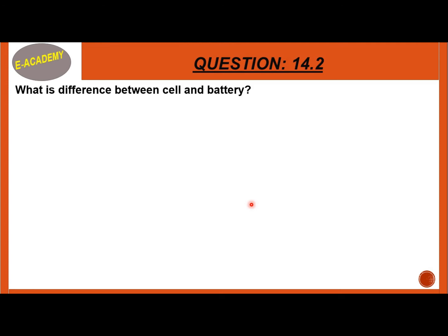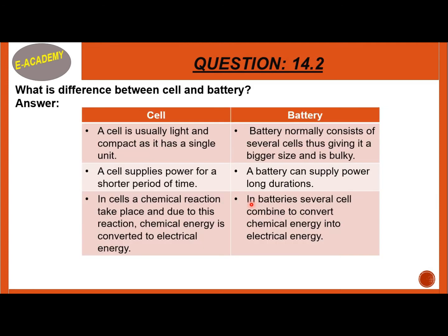Question 14.2: What is the difference between a cell and a battery? A cell is usually light and compact as it has a single unit. A battery normally consists of several cells combined together, giving it a bigger size, making it bulkier.